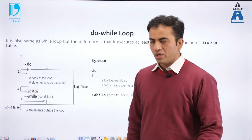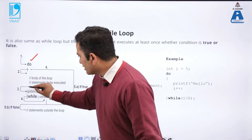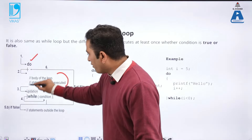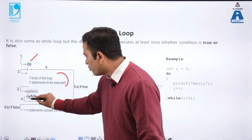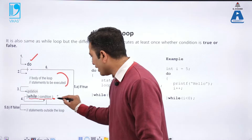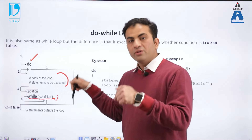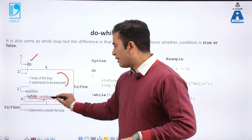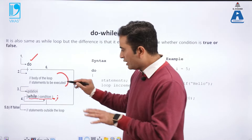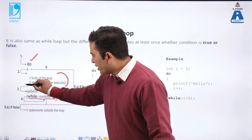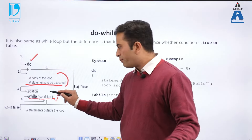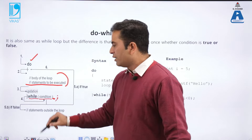In the do-while loop, inside the curly brackets we write our statements. After the closing curly bracket, we apply while with the condition at the end — and importantly, a semicolon is required after the while condition in do-while, unlike the while loop which has no semicolon there. The meaning is: the statement executes first, and after executing once, the condition is checked. If the condition is false, it breaks; if true, the do block runs again.